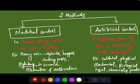First we have to define what pest control methods are. Then we will move into the body part of the question. The pest control methods can be broadly classified into two types: natural control and artificial control. In natural control, environmental factors play a very important role, and human beings have no role to play.